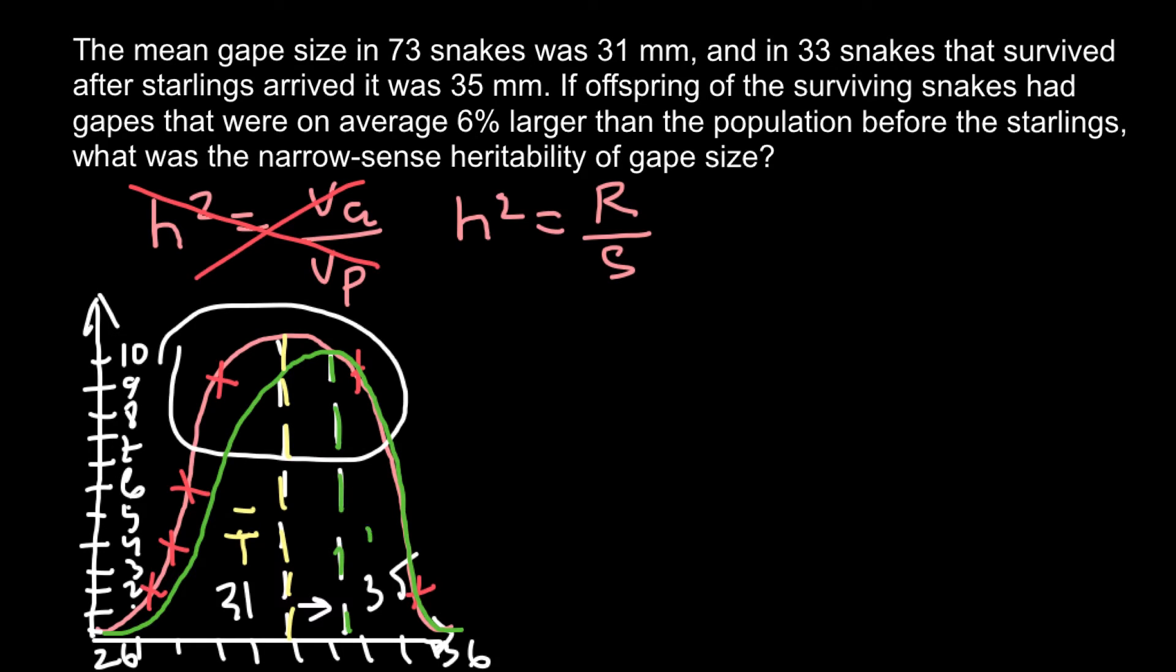So I'm going to use also T to show the mean after selection. And as you see, it changed from 31 millimeters to 35 millimeters. So we can find the difference.